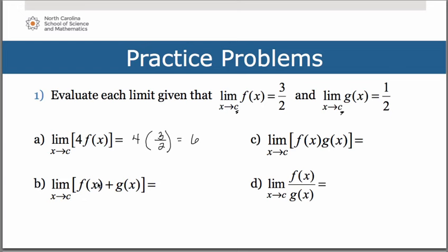In part b, where we want the limit of the sum, remember that's simply going to be the sum of the individual limits. So we have 3 halves plus 1 half, which in the end simplifies to 2.